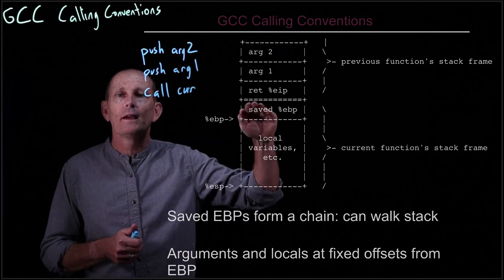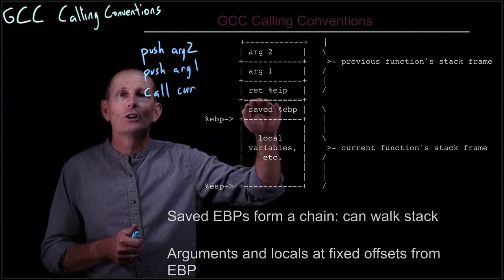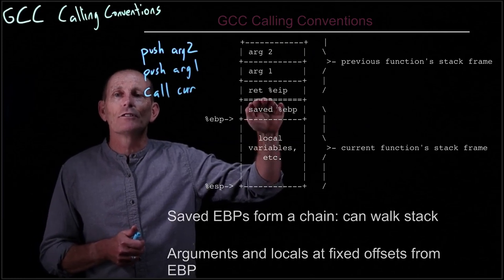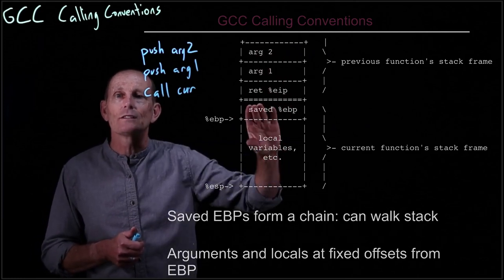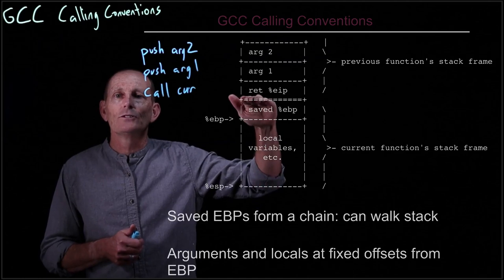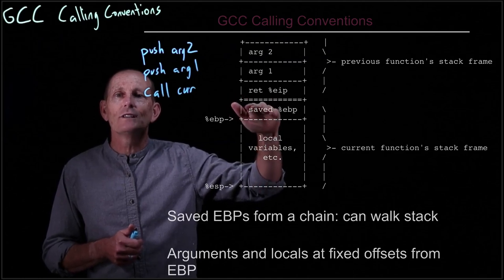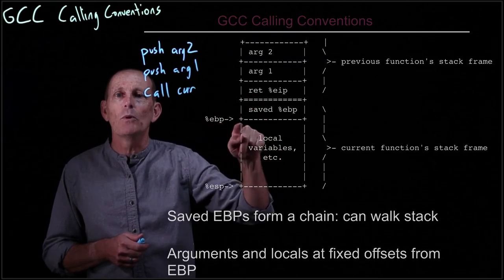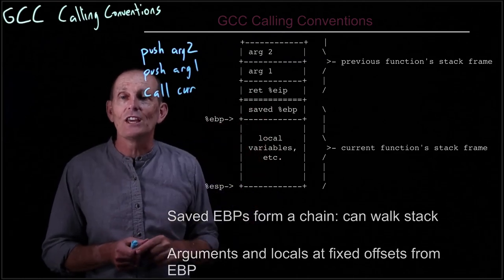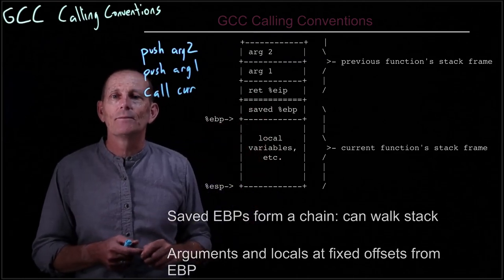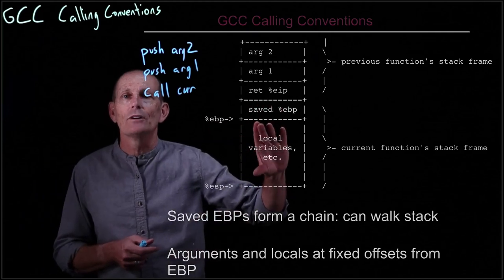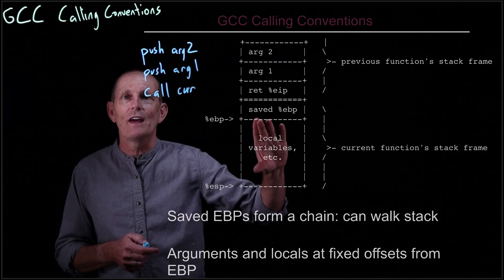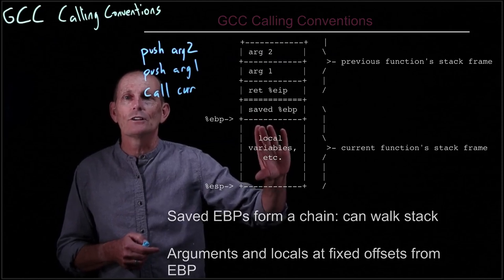So that's the return EIP. This double line here shows the difference from one stack frame to the next. So then we have a saved EBP, which is our frame pointer, and the EBP will point to that saved EBP. And then we have local variables or saved registers that the current function is going to use.